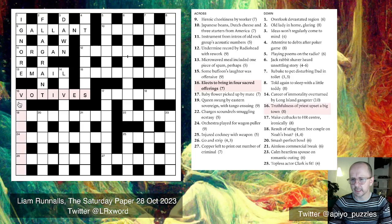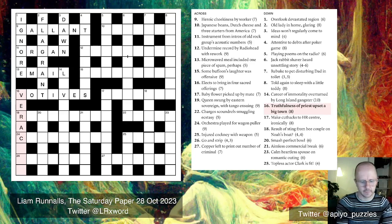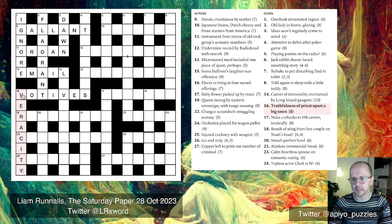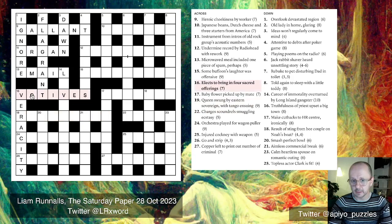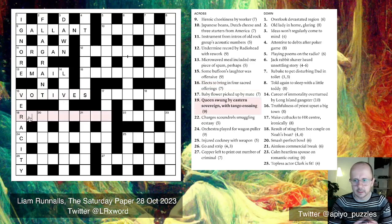17-down: 'truthfulness of priest upset a big town.' This looks like VERACITY. A priest is a rev — if we reverse rev we get 'ver,' then 'a,' then a big town is a city: veracity means truth. That confirms VOTIVES must be correct. One of the great things about cryptics is you learn words — without the crossing letters I'd never have known 'votives.'